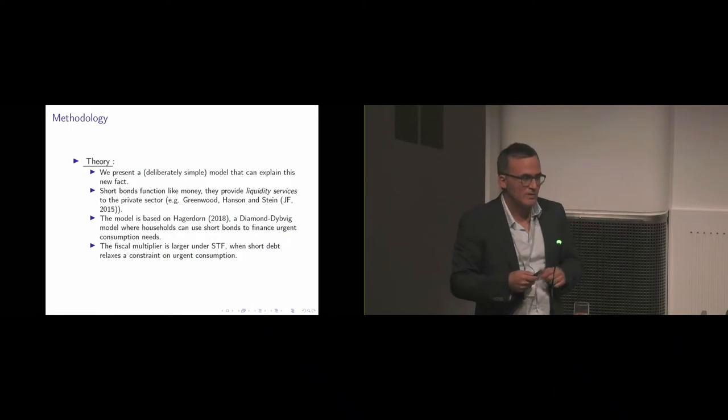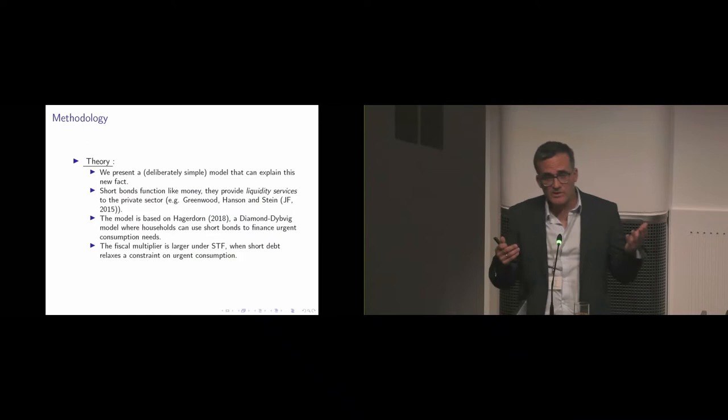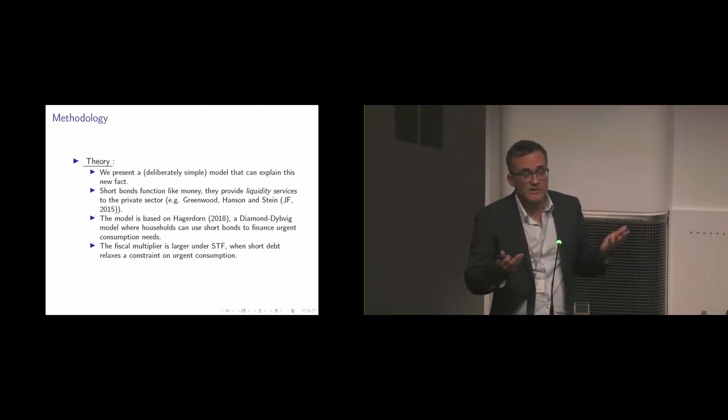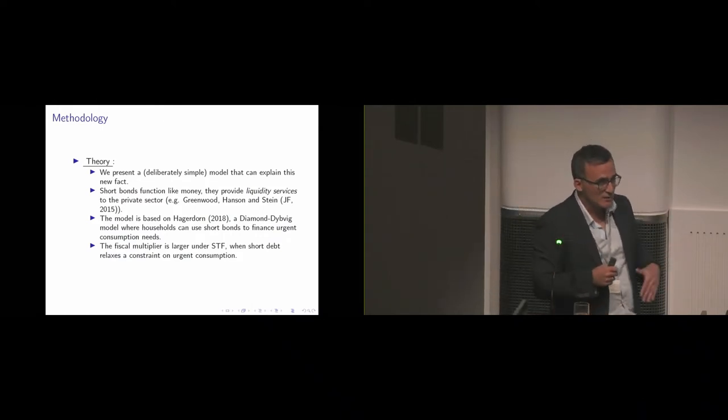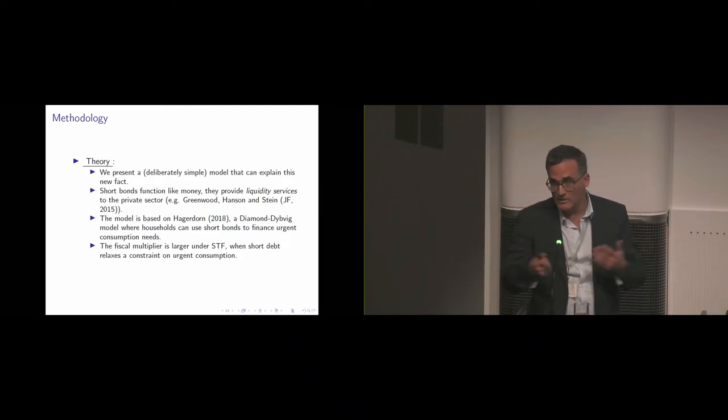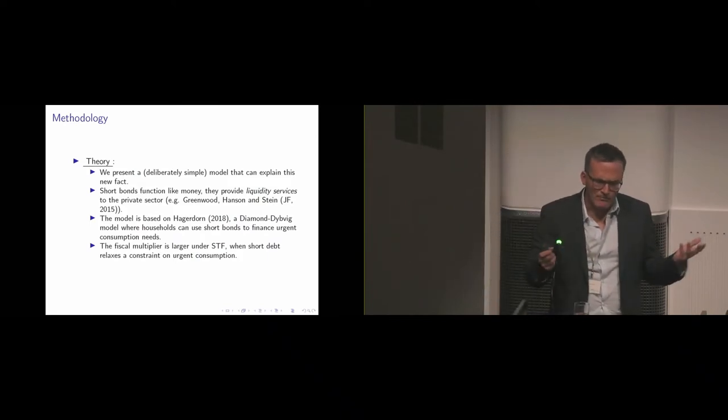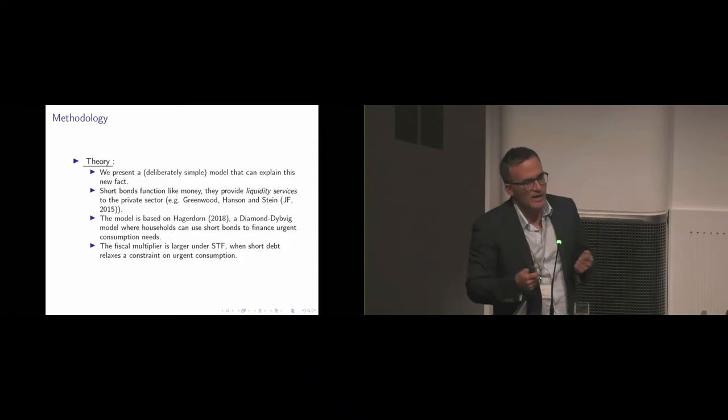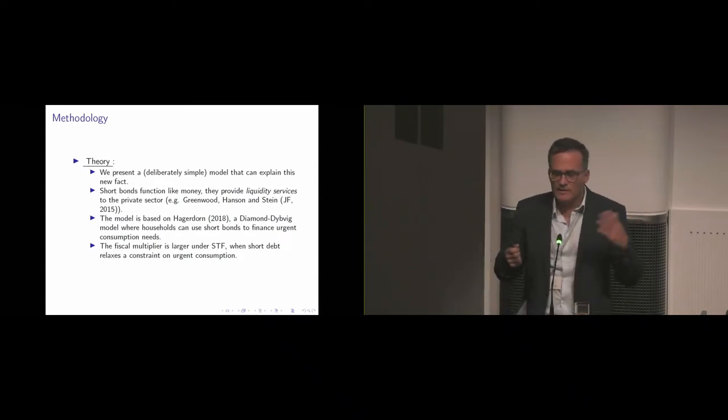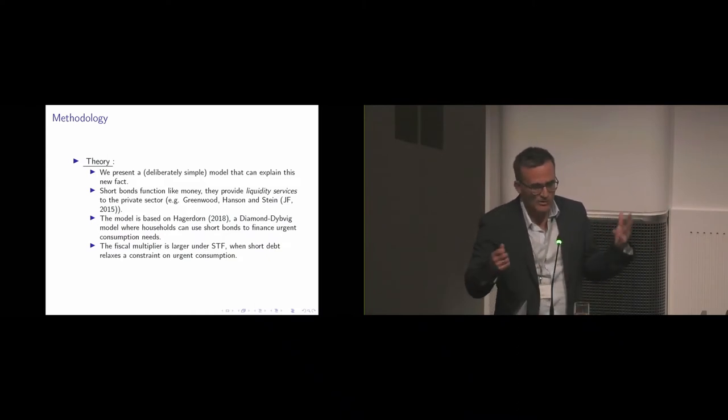The theory is going to be a deliberately simple model. If you think of a standard Ricardian model where households are using long and short bonds just to substitute consumption temporarily, then the maturity financing of a spending shock is not going to matter. So in order to make debt matter, you have to turn towards theories which tell us that bond supply is relevant.